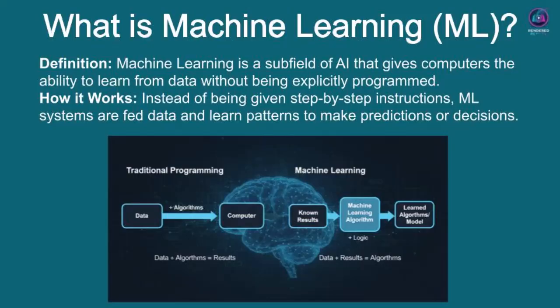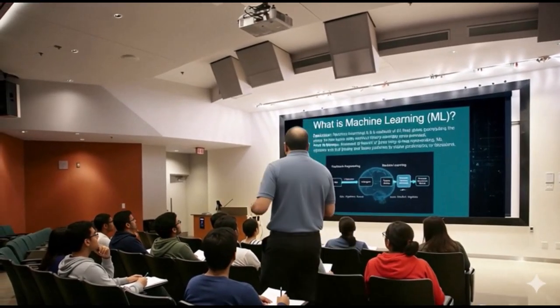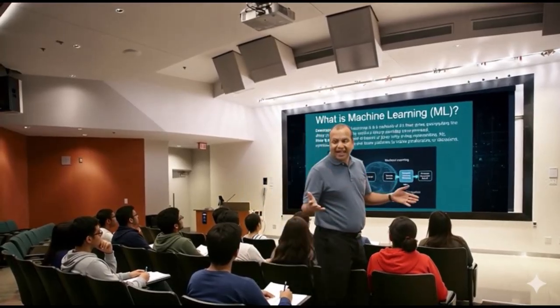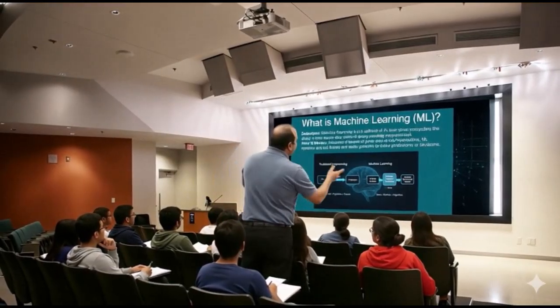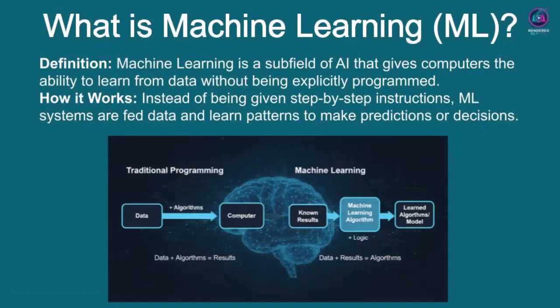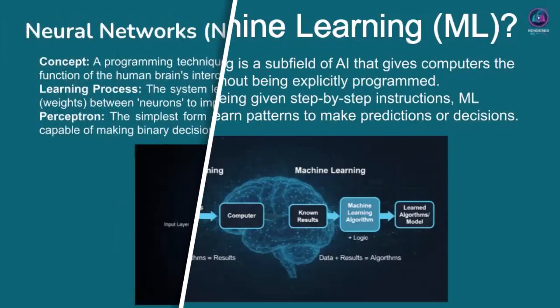The magic of machine learning is that the computer then learns the underlying algorithms or patterns that connect that data to those results. It essentially figures out the rules for itself. So whether it's recognizing patterns in images, making predictions based on past sales, or recommending movies, machine learning models learn directly from the information they are fed, allowing them to adapt and improve over time without constant human reprogramming. This ability to learn from experience is what makes ML so powerful and widely applicable.